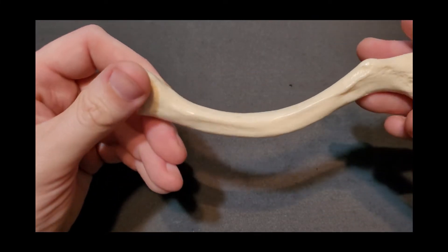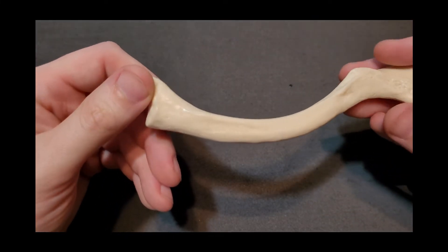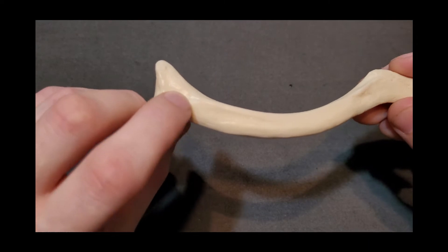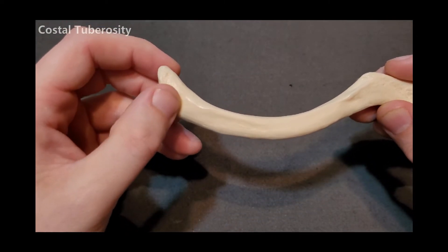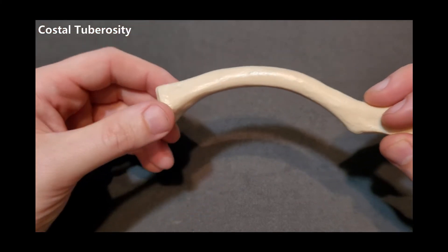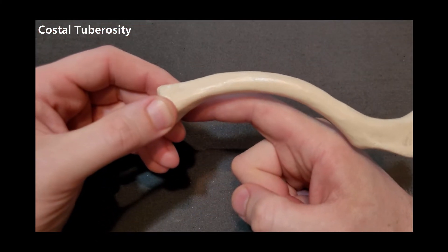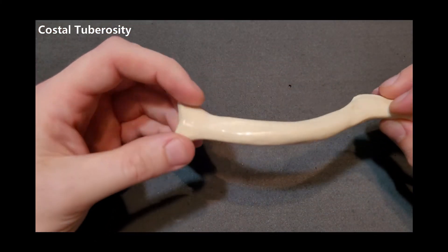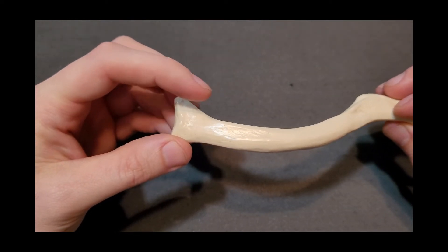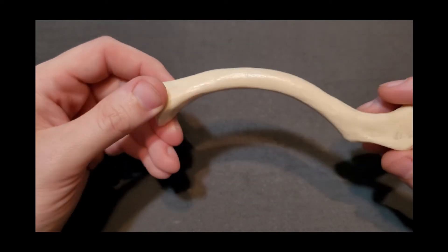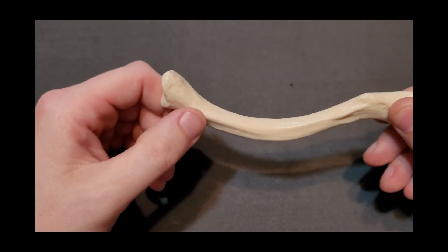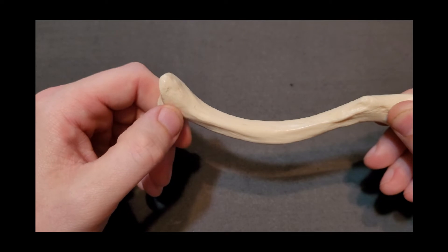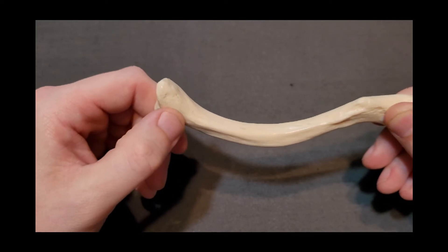The next landmark, I'm going to roll this over to the inferior surface here. You're going to see a slight indentation or what's known as an impression. So we have a ligamentous attachment here. This clavicle is sitting directly over top of the first rib and there's some costal cartilage of that first rib. So it goes from the costal cartilage to the clavicle. That's called the costoclavicular ligament and this is its attachment right in here. So the slight impression is for that ligament specifically.